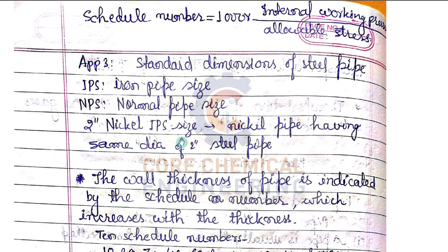Schedule number equals 1000 times internal working pressure divided by allowable stress. When a fluid flows through a pipe, it exerts internal pressure on the piping system. For example, in a steam line, you can read the pressure from a pressure gauge or pressure transmitter. That pressure is the internal working pressure, which divided by the allowable stress and multiplied by 1000 gives the schedule number.